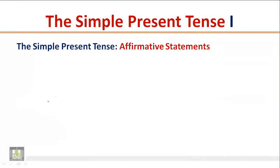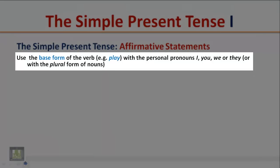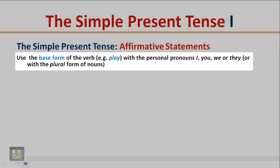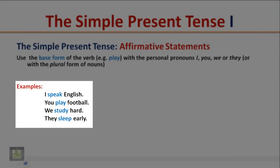The Simple Present Tense: Affirmative statements. Use the base form of the verb — for example, 'play' — with the personal pronouns I, you, we, or they, or with the plural form of nouns. Examples: I speak English. You play football. We study hard. They sleep early. Notice that we use the base form of the verb with I, you, we, and they.